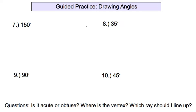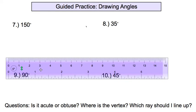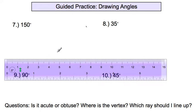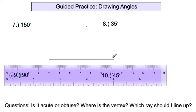Now we're going to get some practice drawing angles. Drawing angles requires you to first draw a straight line — you can use your protractor or a ruler to draw a straight line, and that's going to be the ray you measure from. Draw a nice long line with an arrow at the end. At the other end will be your vertex, and you'll measure the second ray from there. Now you need a protractor.